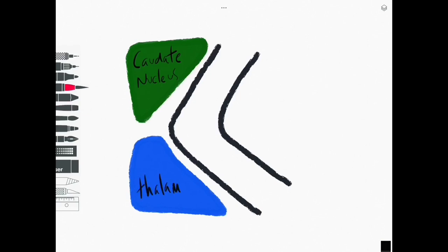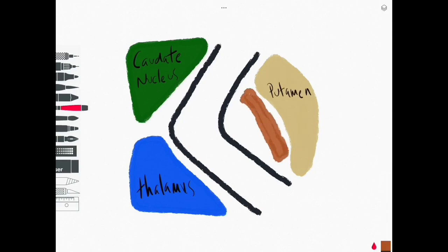The internal capsule sits as a subcortical structure surrounded by some deep nuclei. These are namely the thalamus and some structures associated with the basal ganglia.